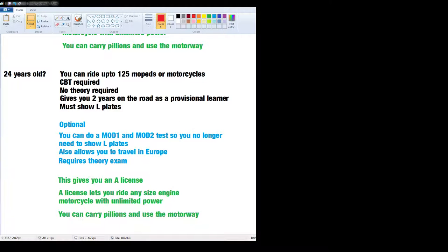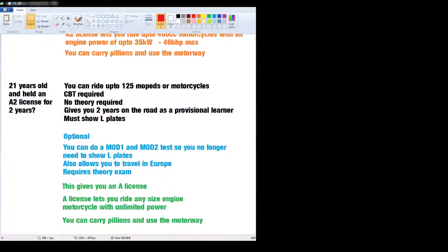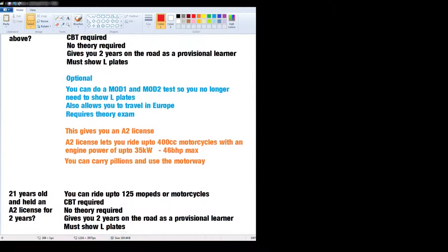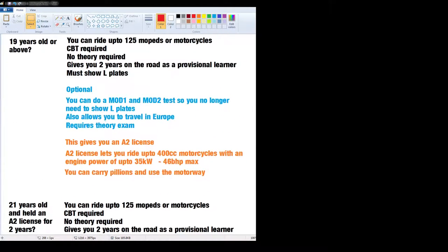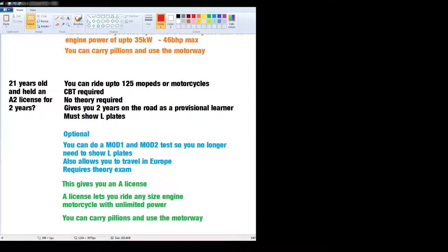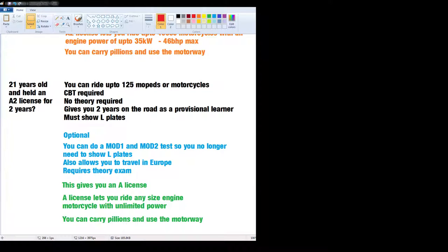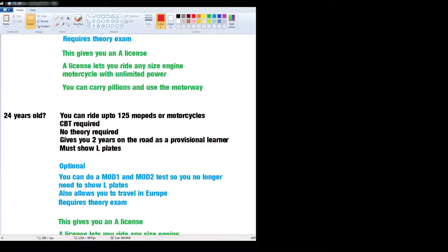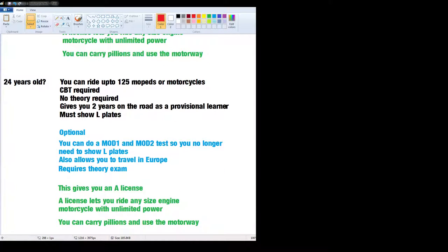So yeah, basically that's it. The only confusing part is this A2 to full license nonsense. I don't know why they do this. I'm assuming it's because, you know, they think younger people are more irresponsible. That's why the age for a full license went from 21 years old to 24. But this is how it is now and I hope that's cleared up a lot of confusion.